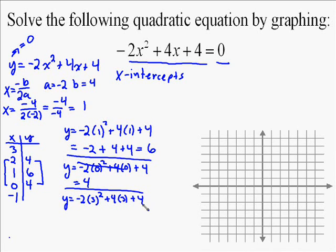And so you're going to have negative 2 times 3 squared plus 4 times 3 plus 4. 3 squared is 9, and negative 2 times 9 is negative 18. And so that first part is negative 18, and then 4 times 3 is 12, and then plus 4. Simplify this expression, you get negative 18 plus 12 plus 4 is negative 2. And so our y-coordinates for 3 and negative 1 are negative 2.